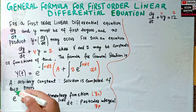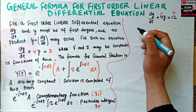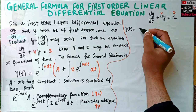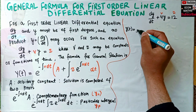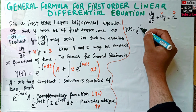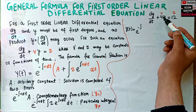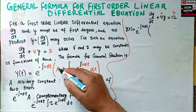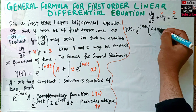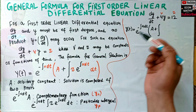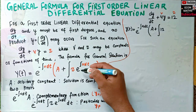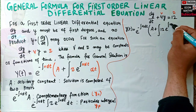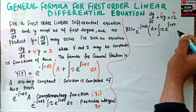We now use the general formula to find the solution. So y(t) equals e to the power minus integral of v dt — substituting v equals 4, we write integral of 4 dt — then the bracket containing A plus the integral of z, which is 12, times e raised to the power integral of 4 dt, with respect to dt.